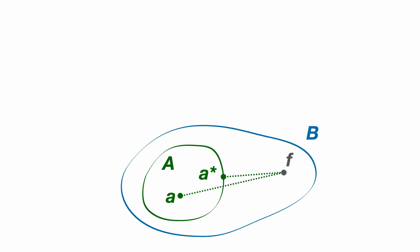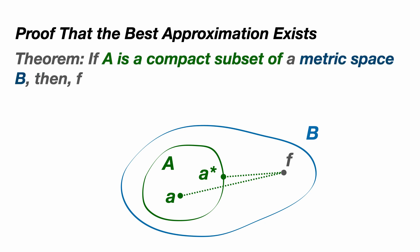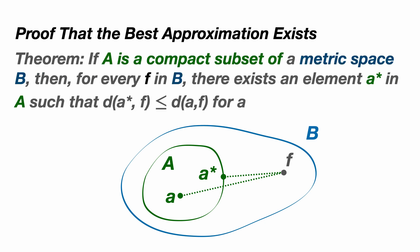We'll now show that this so-called best approximation exists regardless of which F we choose. Stated as a theorem, we say that if capital A is a compact subset of a metric space capital B, then for every F in capital B there exists an element A star in capital A such that the distance between A star and F is less than or equal to the distance between F and any other element in capital A.